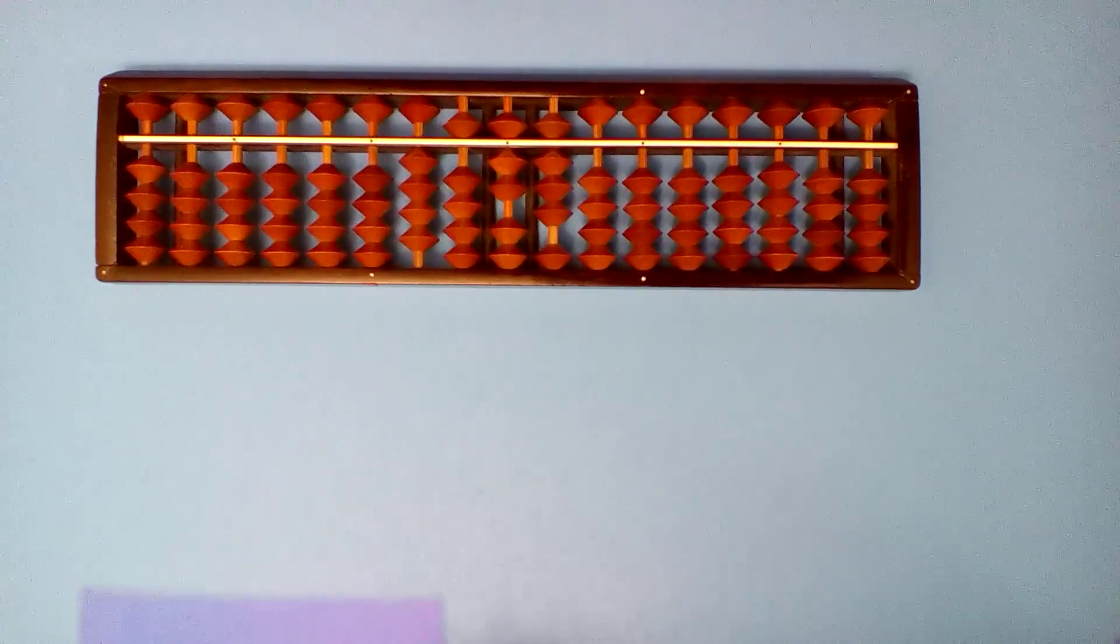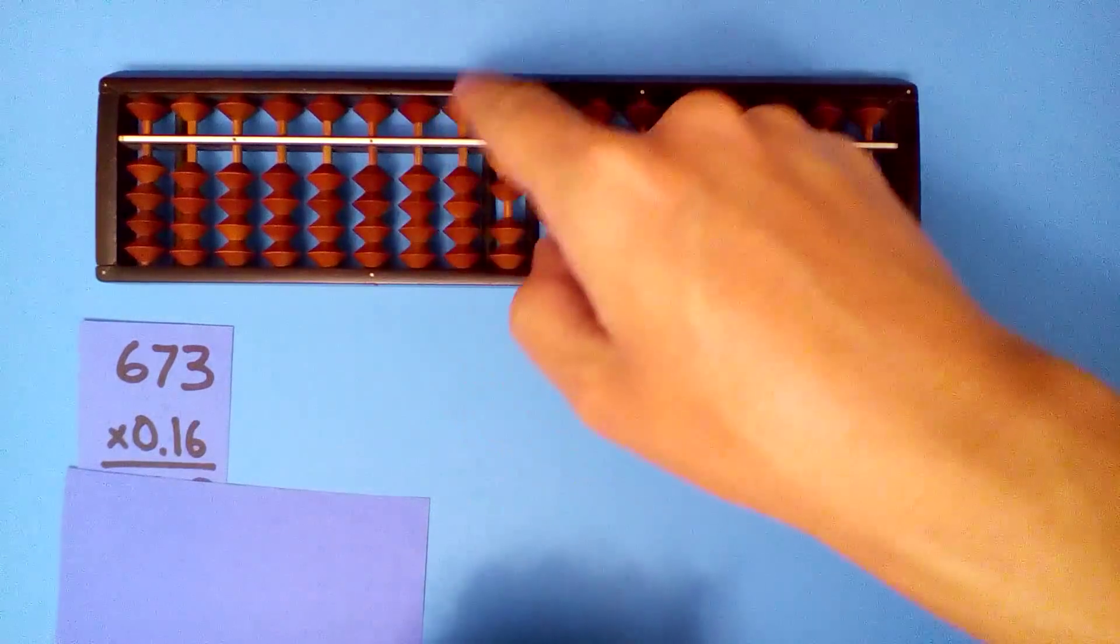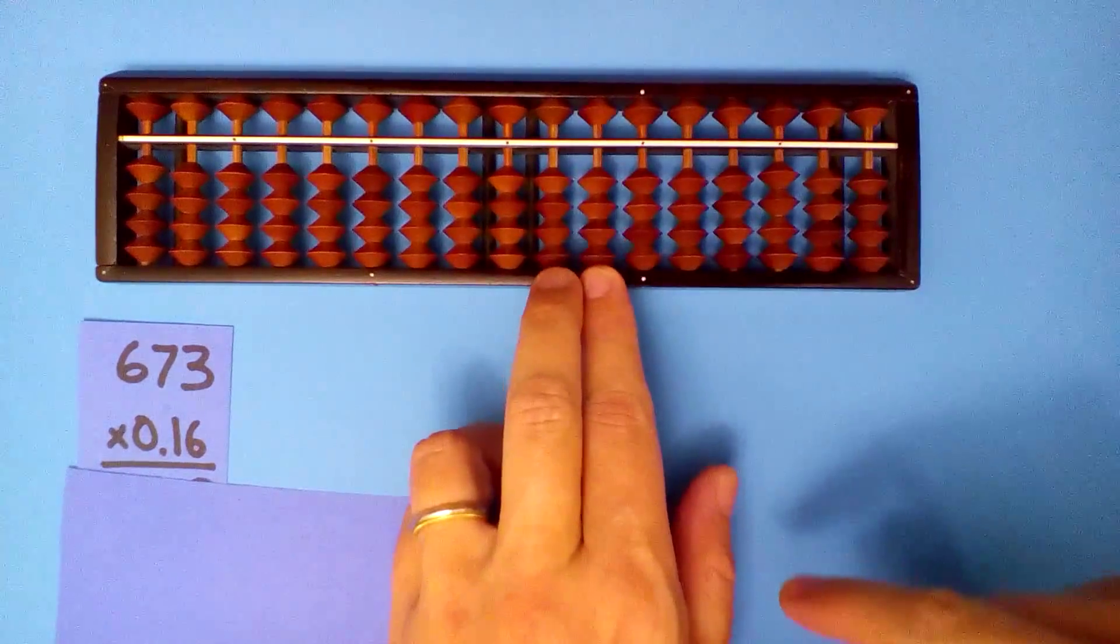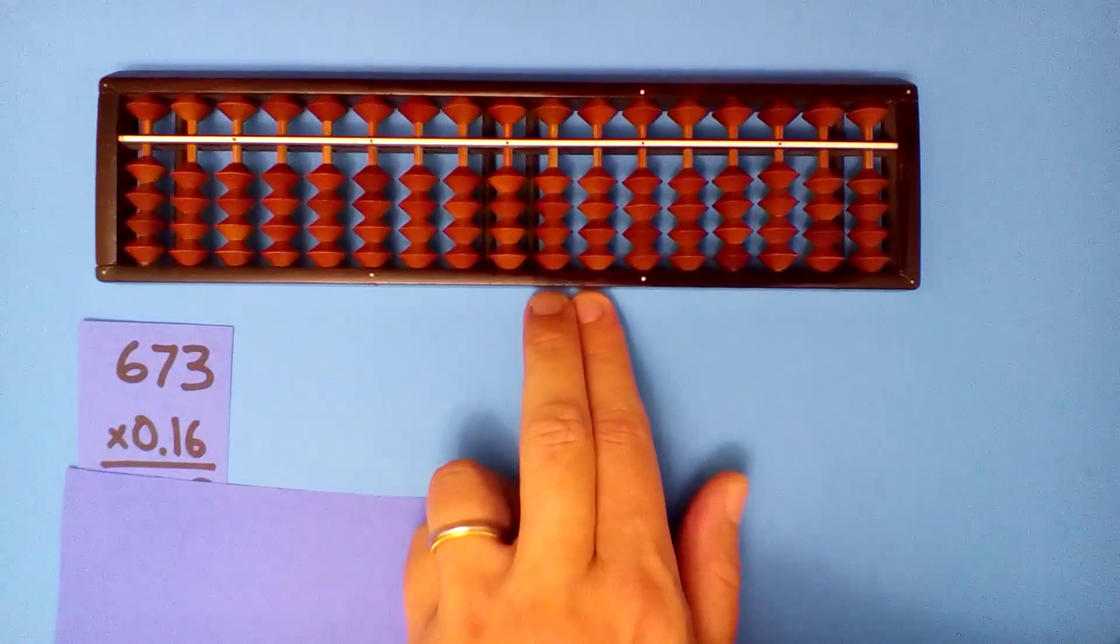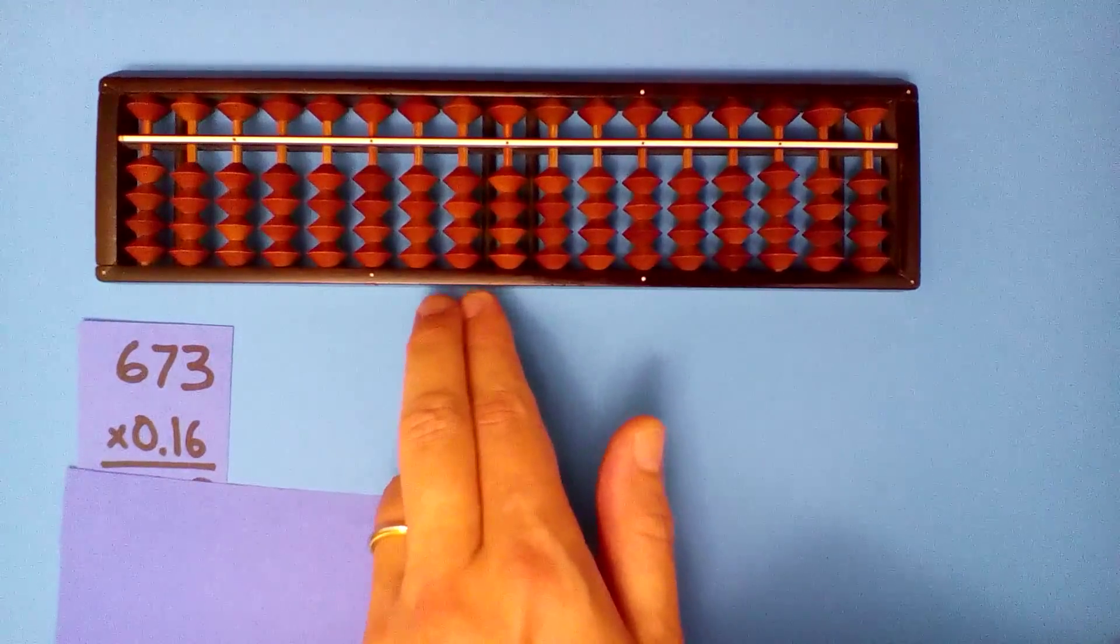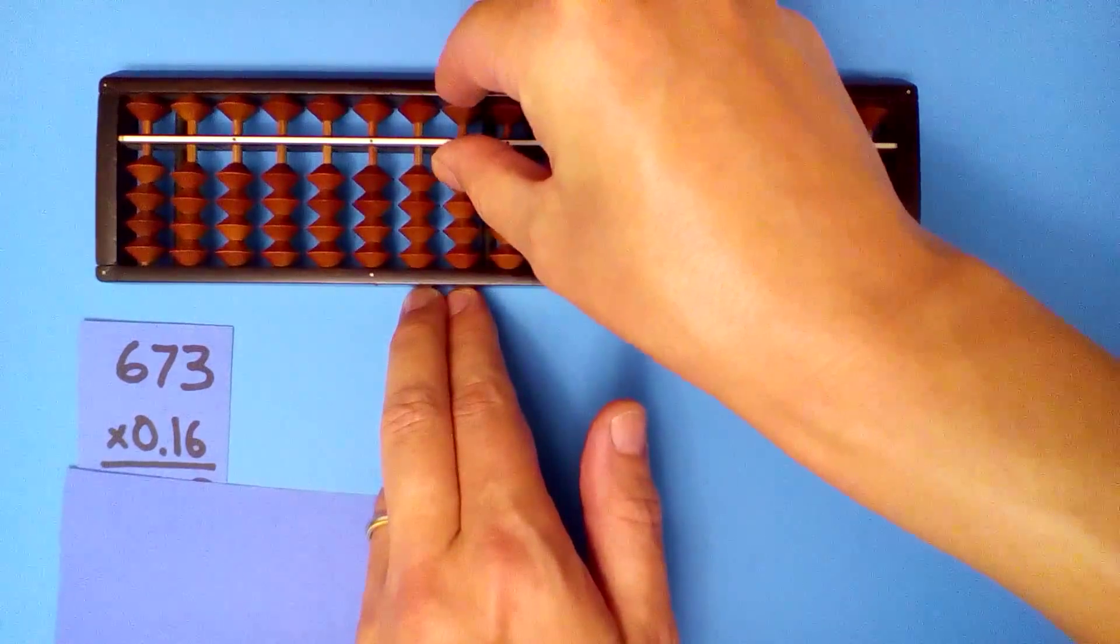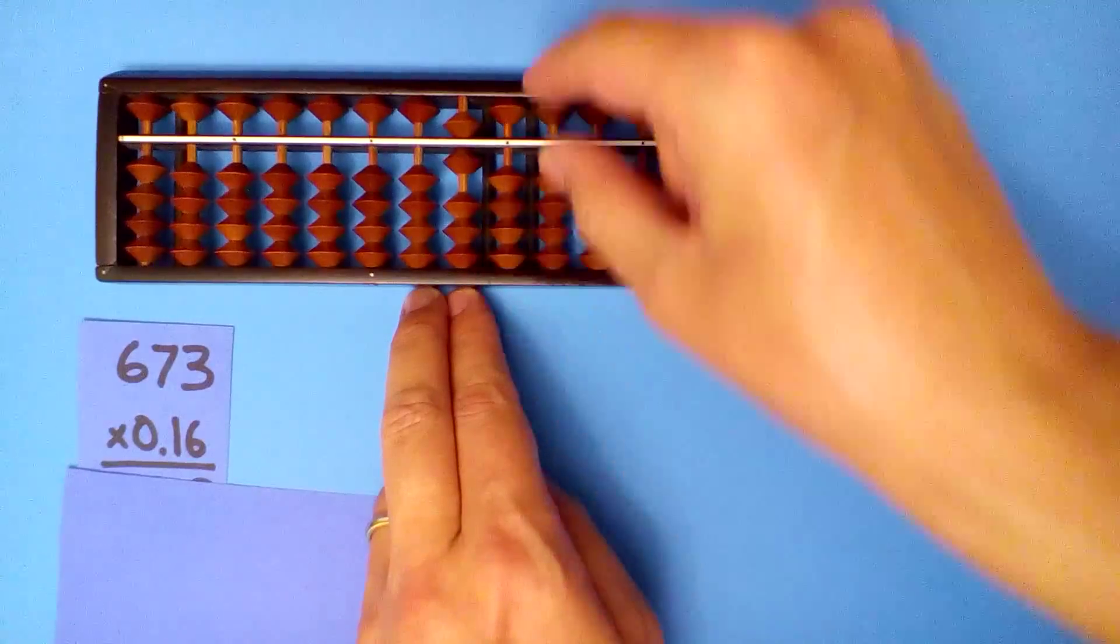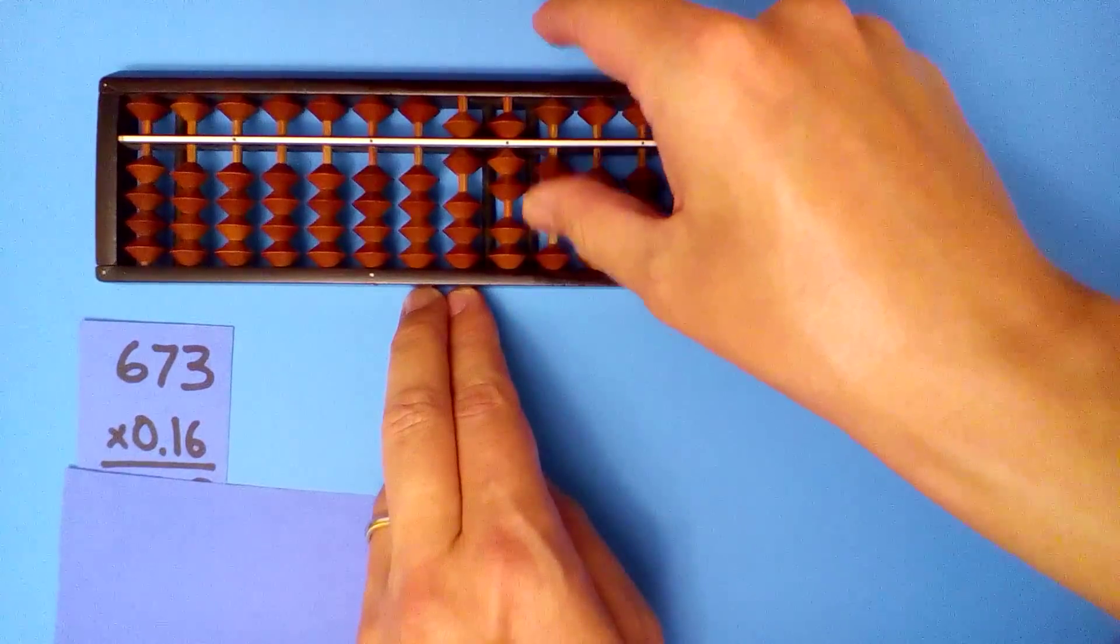What is 673 times 0.16? Tenths and hundredths. Three and zero make three. One, two, three. We'll use the one first. One times six, six. One times seven, seven. One times three, three.